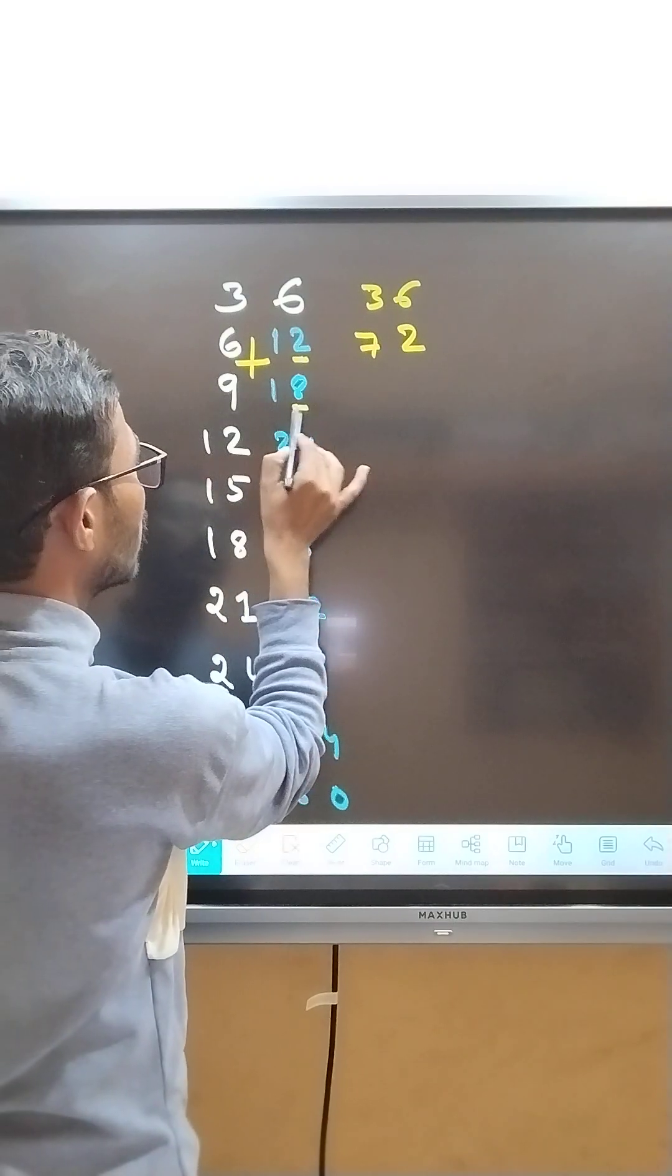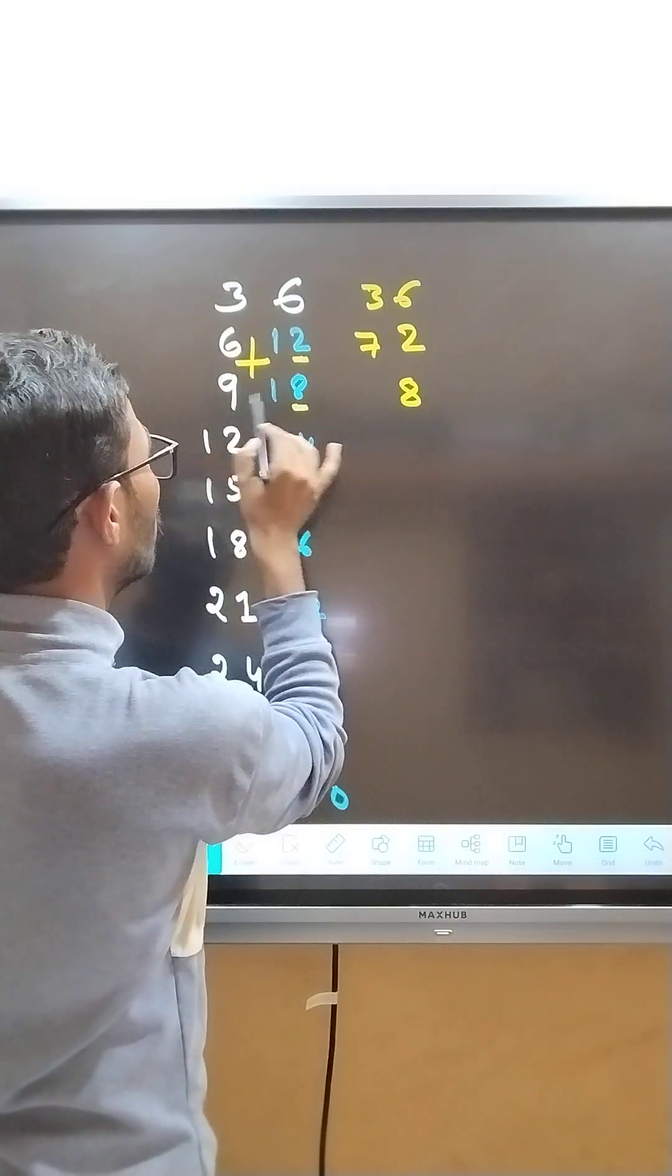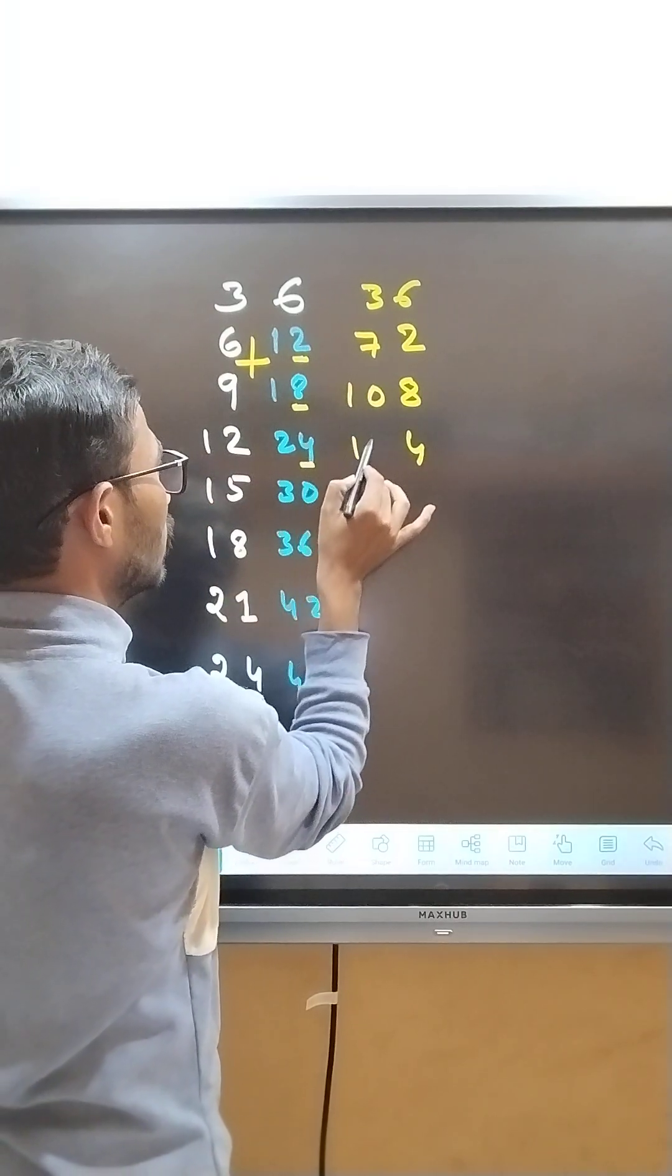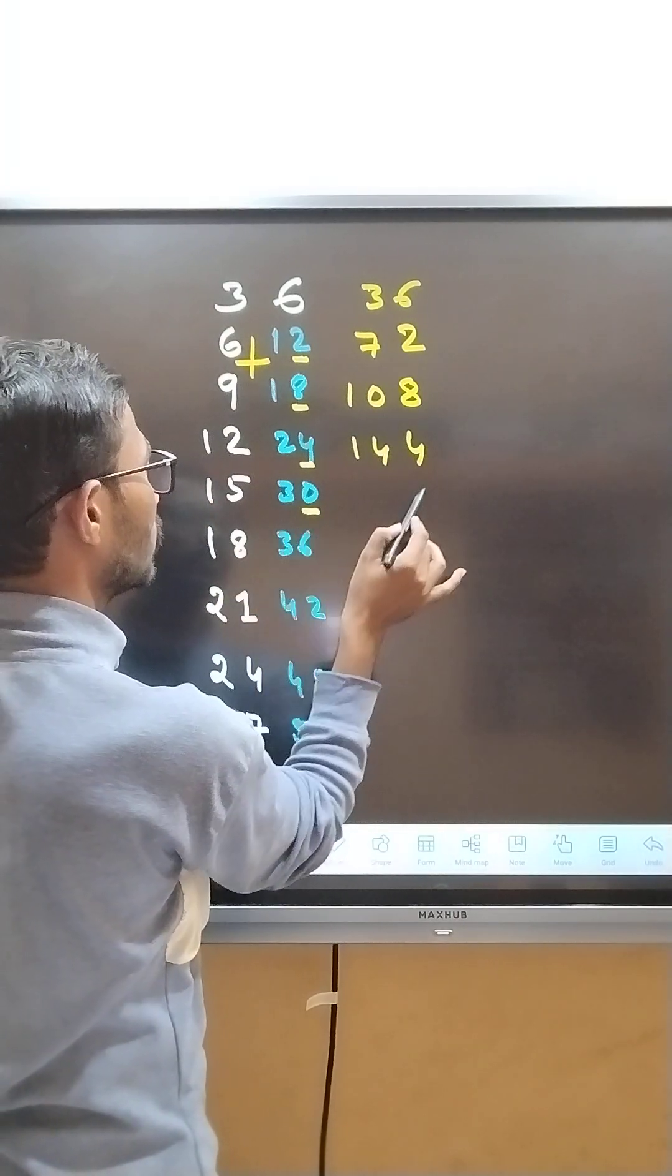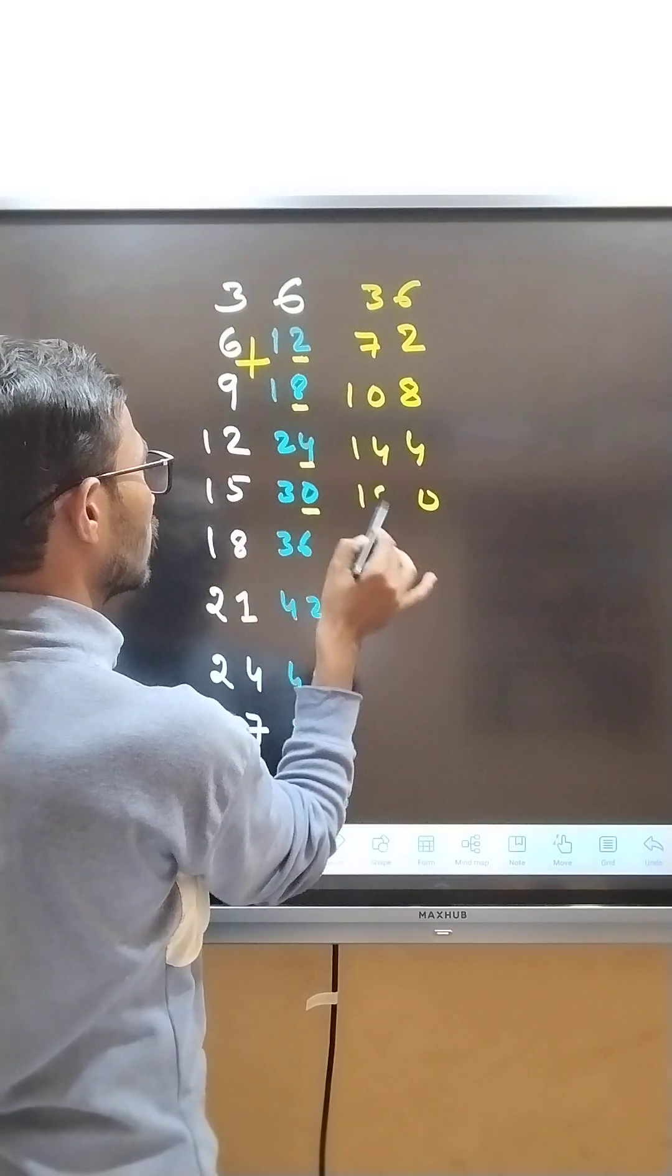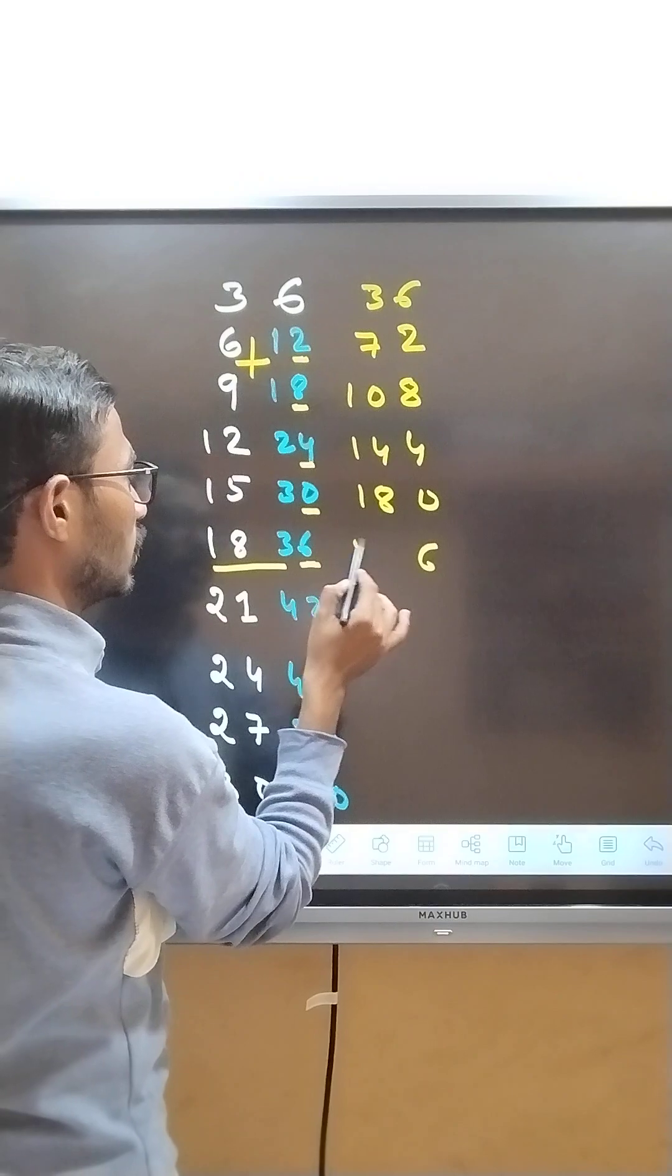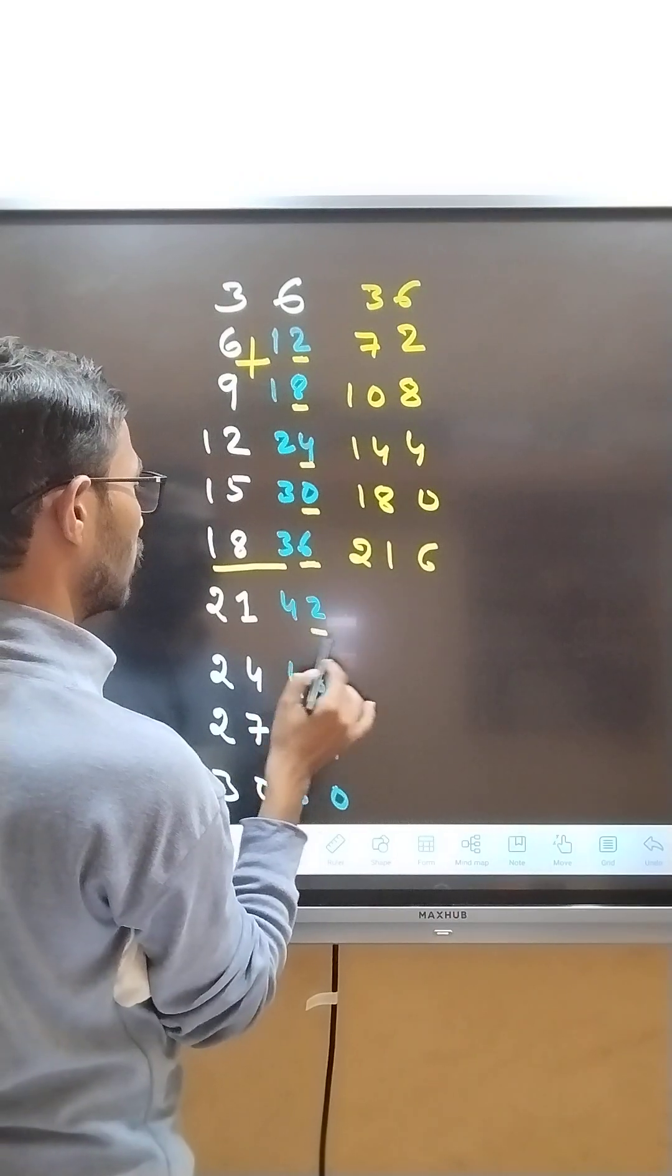The last number is 8. 9 and 1 is 10, the last number is 4. 15 and 1 is 14, the last number is 0. 15 and 3 is 18, the last number is 6. 18 and 3 is 21, the last number is 7.